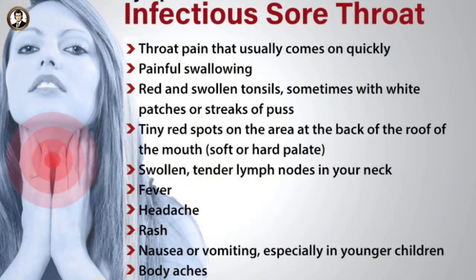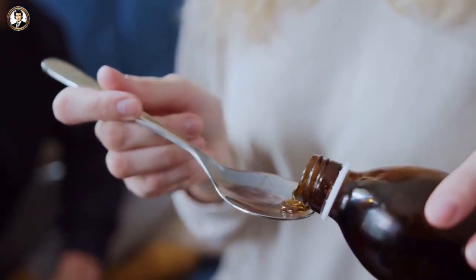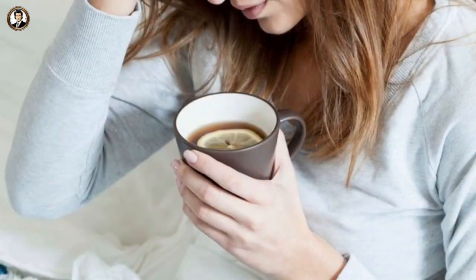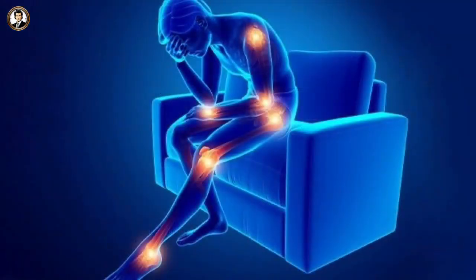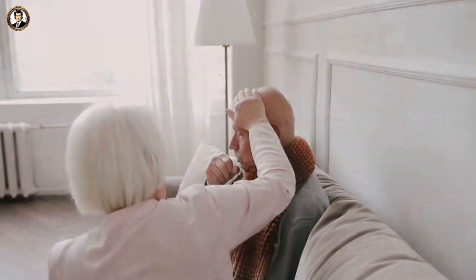Sore throat: the inflammatory response can cause discomfort, pain, or a scratchy sensation in the throat. Coughing is the body's defense mechanism to clear mucus and irritants from the airways; it can be triggered by post-nasal drip or throat irritation. Some individuals may experience mild headaches and body aches as a result of the immune response and generalized inflammation. The release of cytokines can stimulate the body's internal thermostat, resulting in a mild fever in some individuals.